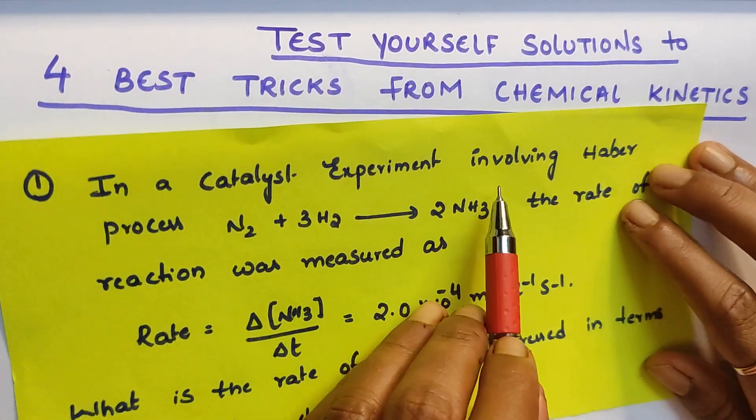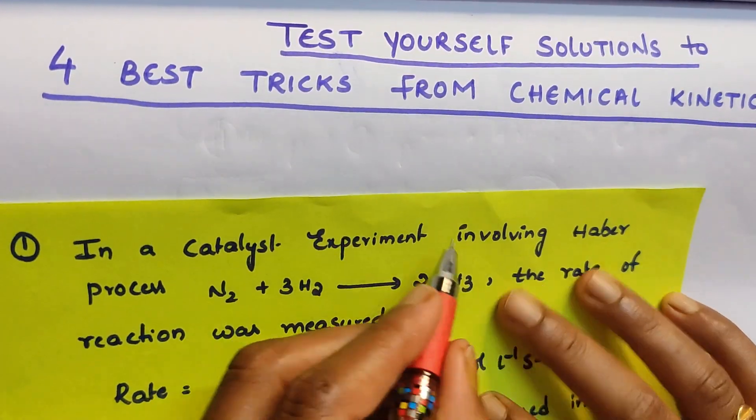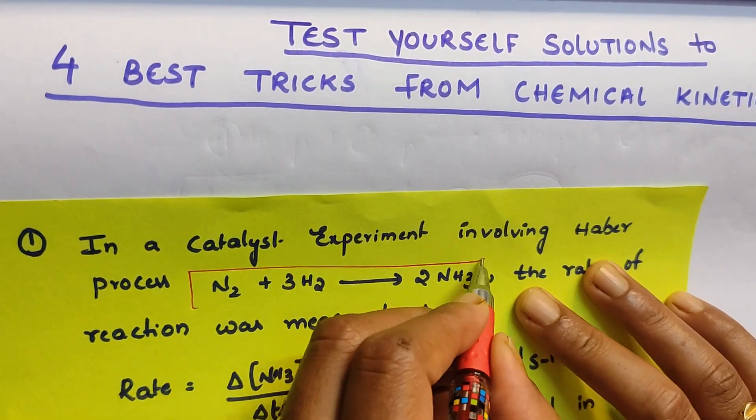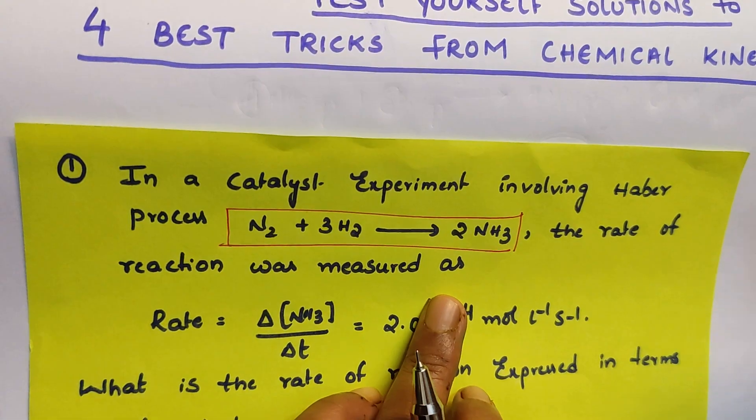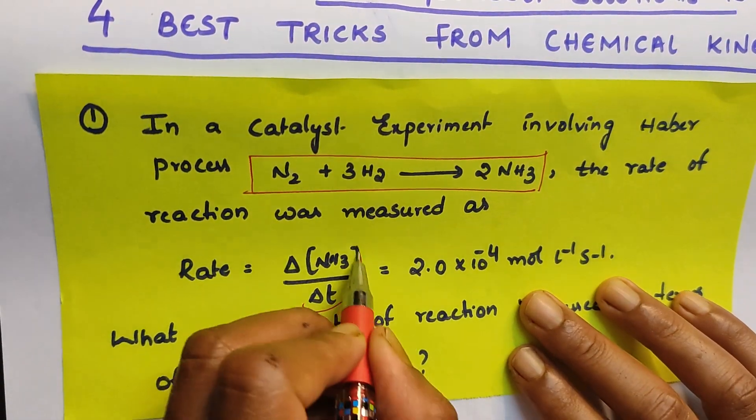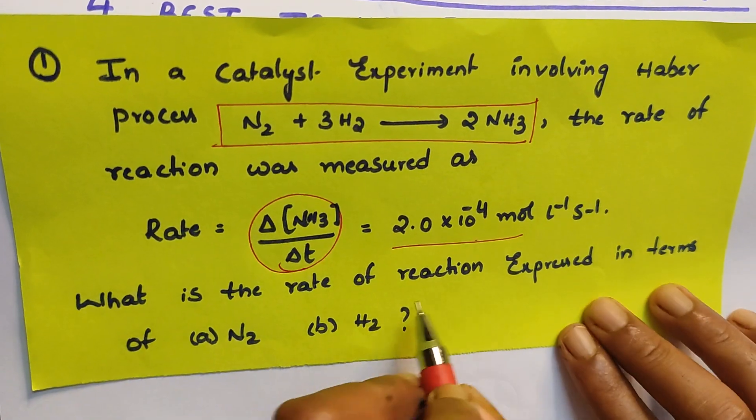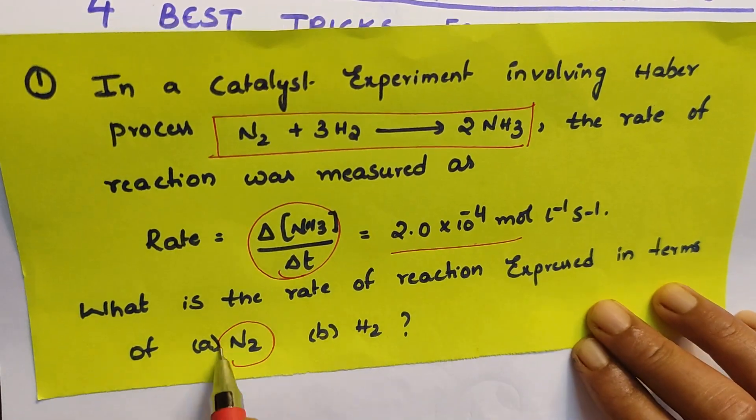In a catalyst experiment involving Haber's process, this is the Haber's process reaction, the rate of the reaction was measured and they have given the rate of formation of ammonia value.